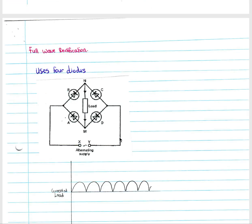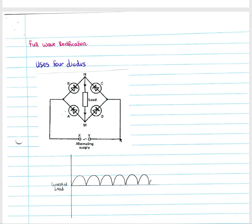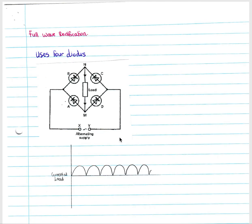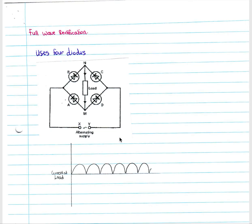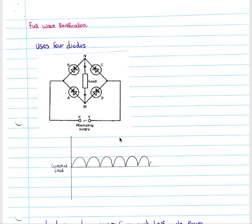They developed something called full wave rectification, which fixes the problem of only getting half of your current. We do this using four diodes, as shown here.